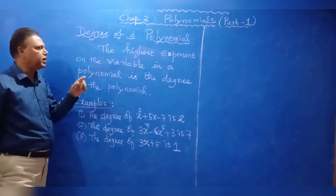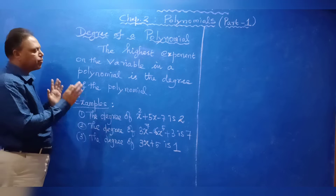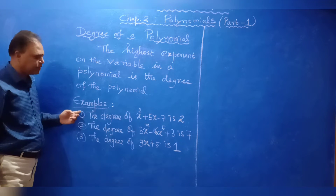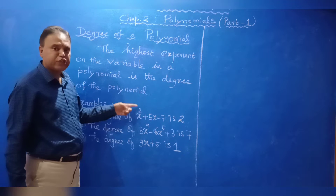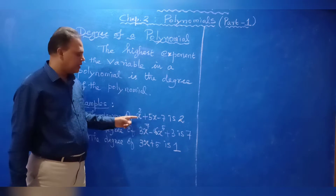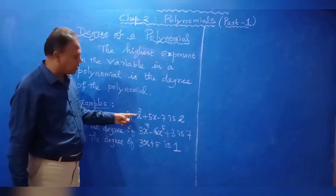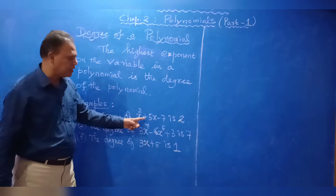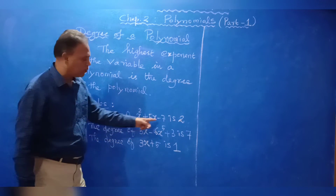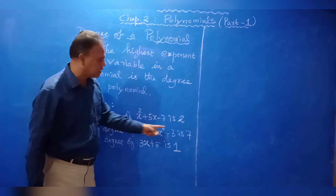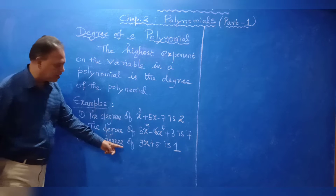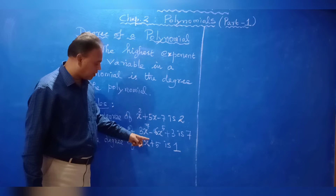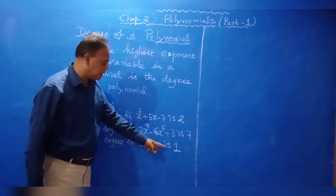Next, we will see the degree of a polynomial. The highest exponent on the variable in a polynomial is the degree of the polynomial. In the example 2X squared plus 3X plus 5, the highest power is 2, so the degree of this polynomial is 2. In another example, the highest power is 7, so the degree is 7. And in 3X plus 5, the highest power is 1 — no written number means it is 1 — so the degree is 1.